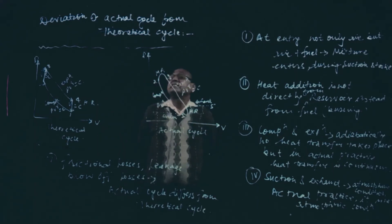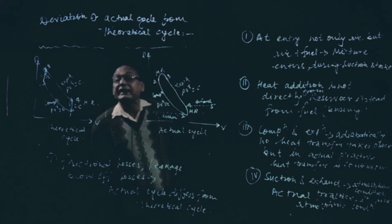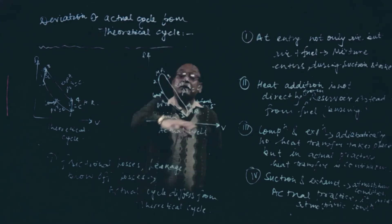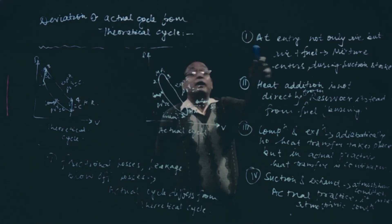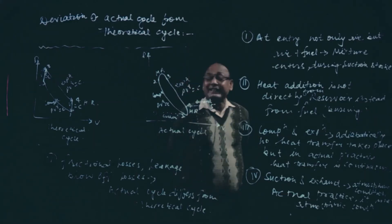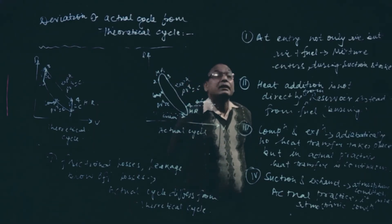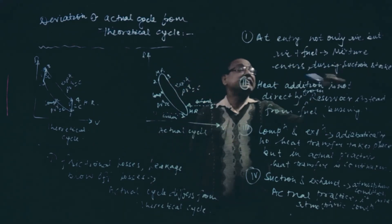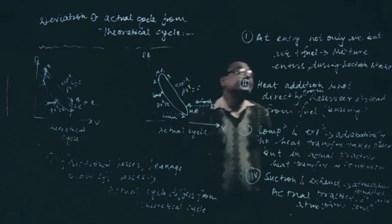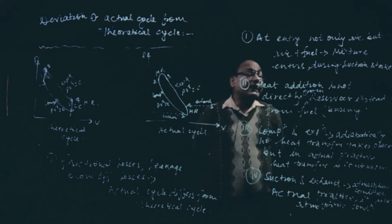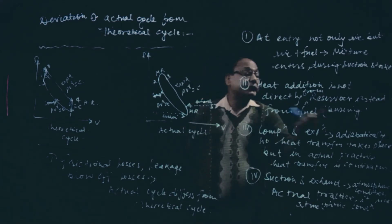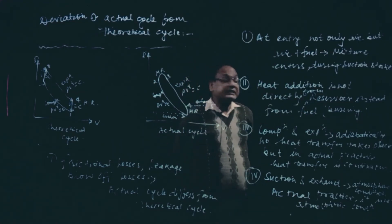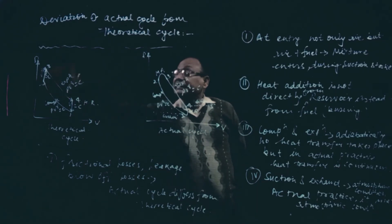Let us sum up what we have studied in this class — deviation of actual cycle from theoretical cycle. This is the theoretical cycle PV diagram of the Otto cycle, and this is the actual cycle. Why does this happen? First, at entry condition, we assumed only air enters into the cylinder, but in actual condition, air plus fuel enters — the mixture enters into the cylinder during the suction stroke. Heat addition is not directly from a reservoir; instead, heat addition is from burning the fuel. Compression and expansion are assumed adiabatically, but it is a continuous heat transfer process.